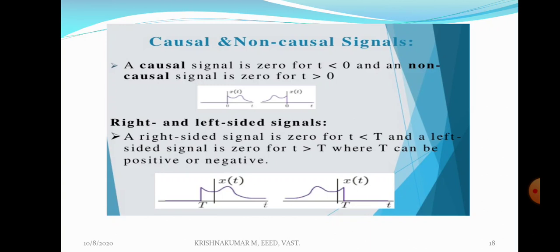What about left-handed signal? x(t) is not equal to 0 when t less than 0. Such a signal exists on the left-hand side also. Even if the value of t is negative, the signal exists in that part. That will be a non-causal signal. Causal signal is a right-handed signal whereas non-causal signal is a left-handed signal. In the causal signal, there is no signal in the negative part. In the non-causal signal, the signal exists even in the negative values of t.